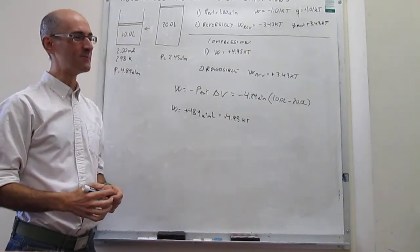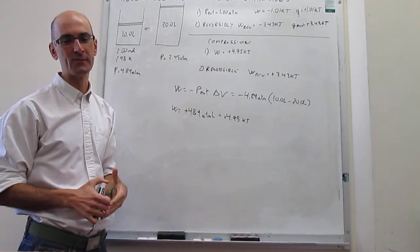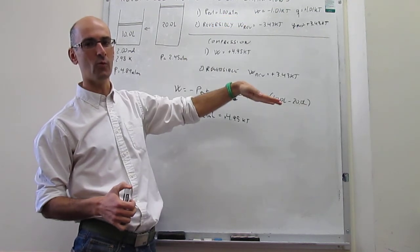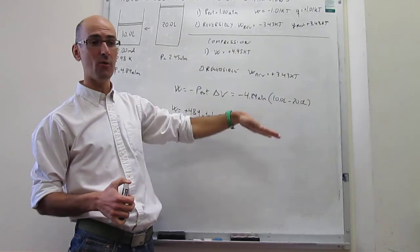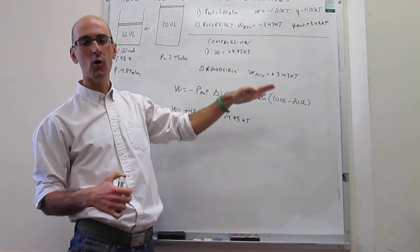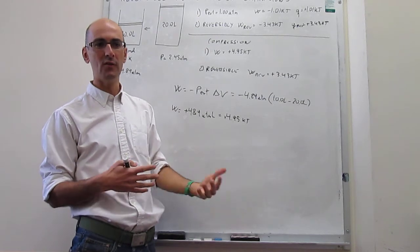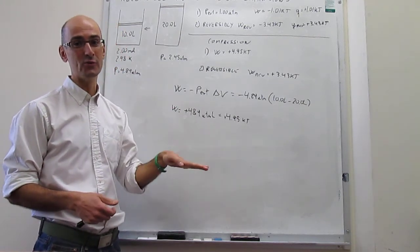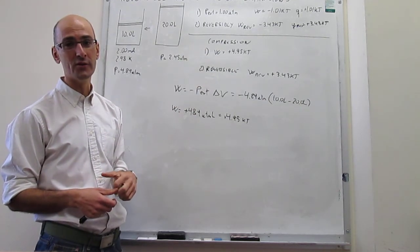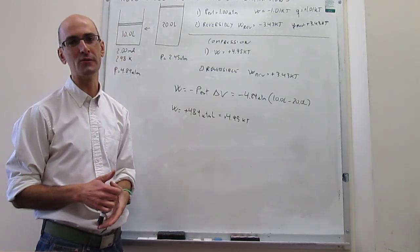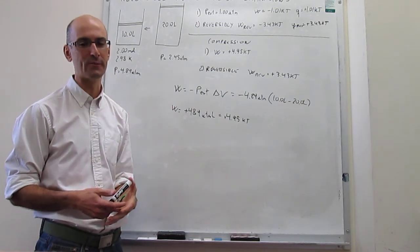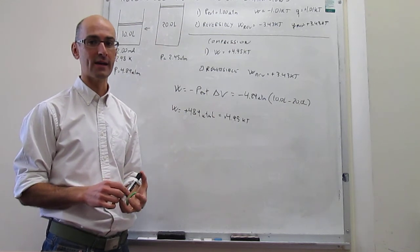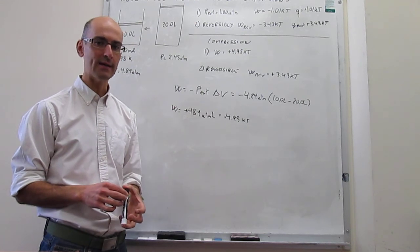Now we can explain why we call this process reversible. In the reversible process, the work obtained from the expansion (−3.43 kJ) is exactly equal in magnitude to the work needed to compress the system back (+3.43 kJ) — there is no net loss or gain of work. In the irreversible case, you only get ~1 kJ from expansion but need ~5 kJ to compress, so the work balance is clearly not zero. To summarize: we've done a numerical application of reversible isothermal gas expansions, seen that they provide maximum work, and seen why they are called reversible.